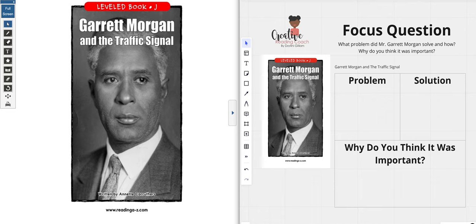Hello my friends and welcome back to my channel. It's Miss Destiny from the Creative Reading Coach. Before we get started, if you need to grab a pen and some paper or a pencil and a notebook, go ahead and do that. My screen is set up with my pen and paper and my book. Today's book is called Garrett Morgan and the Traffic Signal. It is an informational text, meaning it will give us information all about the man who created the traffic signal.